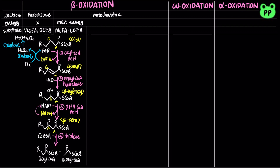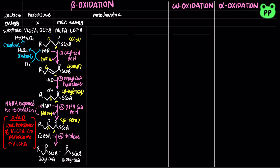The NADH formed in the second oxidative step is exported to mitochondria to be reoxidized. In X-linked adrenoleukodystrophy (XALD), peroxisomes lack a functional transporter for very long-chain fatty acids, resulting in accumulation of very long-chain fatty acids in blood, which will lead to loss of vision, behavioral disturbances, and death within a few years. XALD can be treated by Lorenzo's oil, which reduces the levels of very long-chain fatty acids.